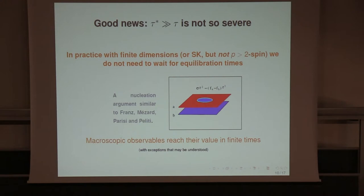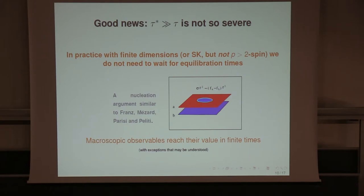This — with some exceptions we can discuss — is the justification to do replicas to infer dynamical data. It means that for finite-dimensional systems, you can do a simulation without actually needing that the slow timescale be divergently slower than the fast one. It has to be much slower, but there is no exponential of N between them using this argument.